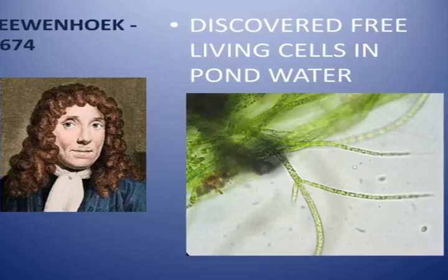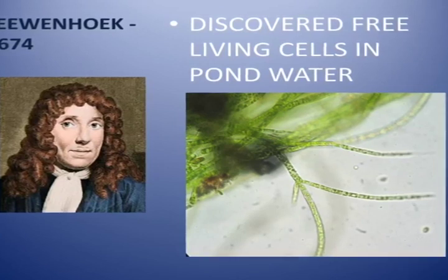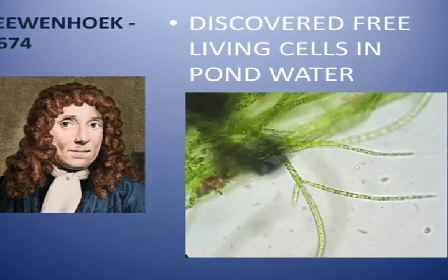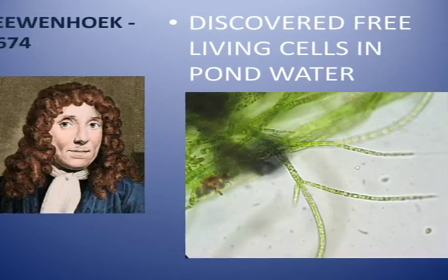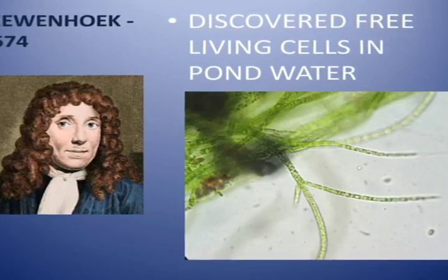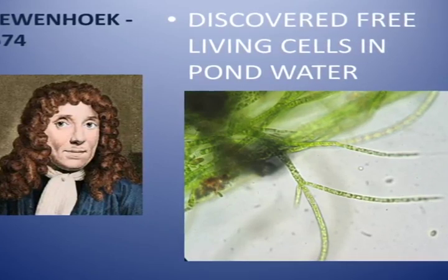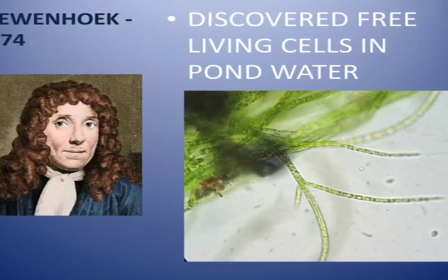The second scientist is Leeuwenhoek. In 1674, with an improved microscope, he discovered free-living cells in pond water for the first time. Free-living cells means organisms moving around under the microscope; they are called free-living organisms.